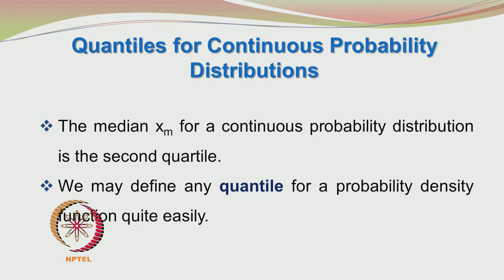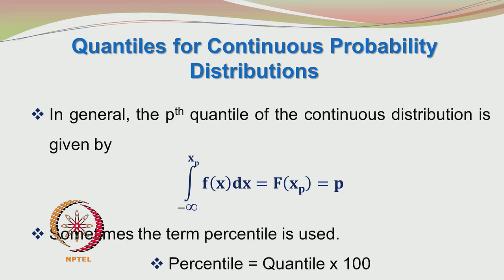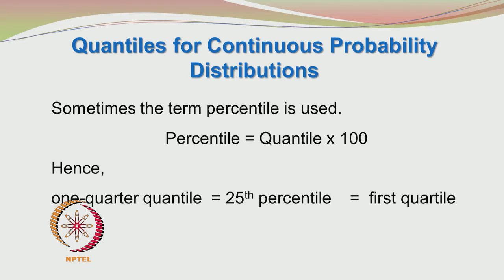We may also define a quantile for a probability density function. The quartile is spelled with an R; now we are talking about quantiles with an N. By definition, the pth quantile of the continuous distribution is given by the integral from minus infinity to xp of f(x)dx, which equals the cumulative distribution function of xp, and that equals p. The percentile is the quantile times 100, so the 0.25 quantile is the 25th percentile, which equals the first quartile.